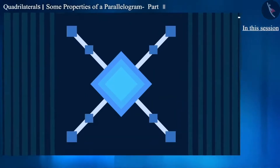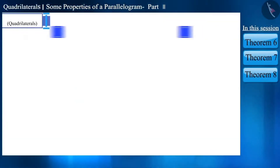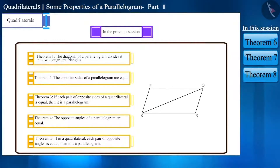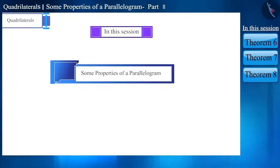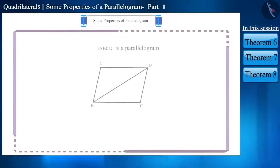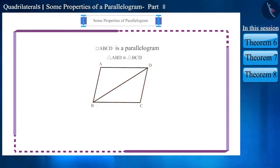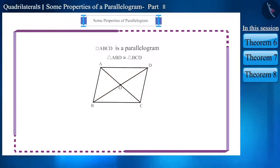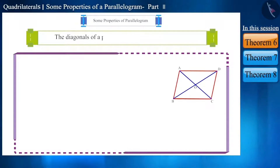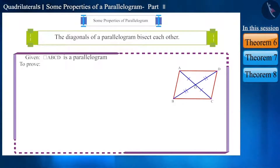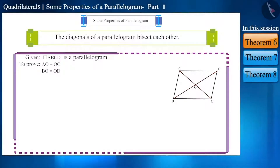Hello friends, welcome to this video on quadrilaterals. In the previous video we discussed some properties of a parallelogram. Today we will see some more properties. We know the diagonal of a parallelogram divides it into two congruent triangles. If we construct both diagonals of a parallelogram intersecting at O, the diagonals bisect each other — that is AO equals OC and BO equals OD. This happens only if the two triangles formed are congruent to each other. We need to prove triangles AOB and COD are congruent.